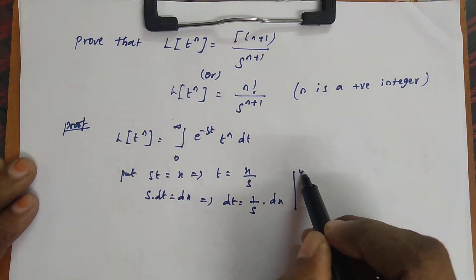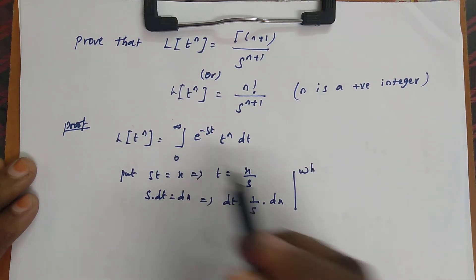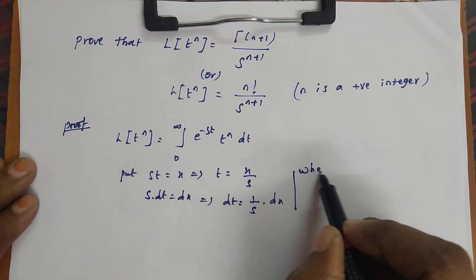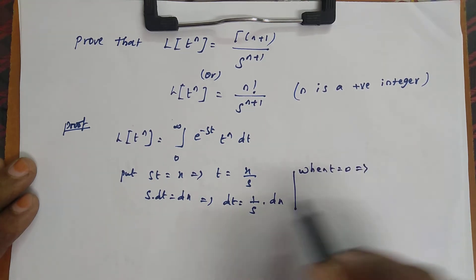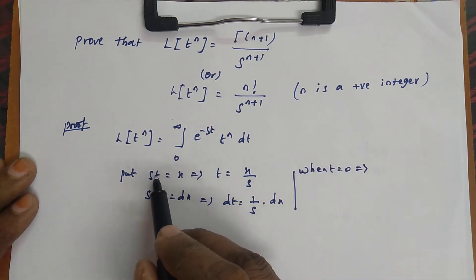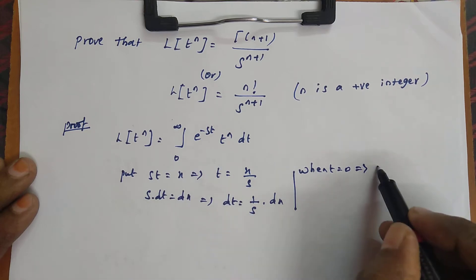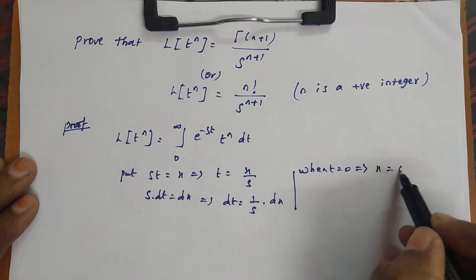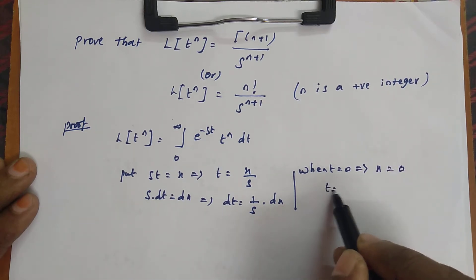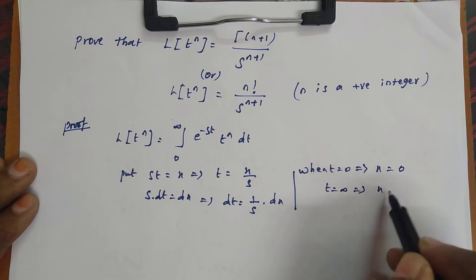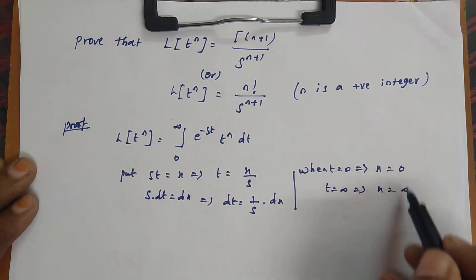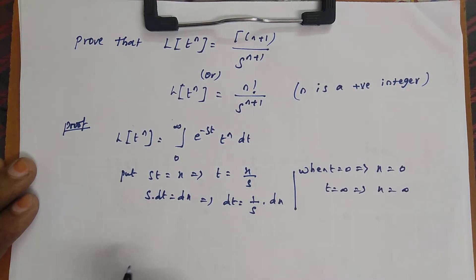Whenever we give a substitution we also check the limits. Here the limit is for t. When t equals 0, substituting gives x equals 0. When t equals infinity, x equals infinity. So the new limit is also 0 to infinity.